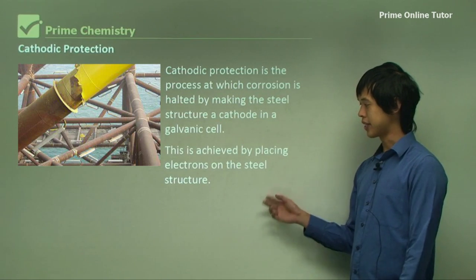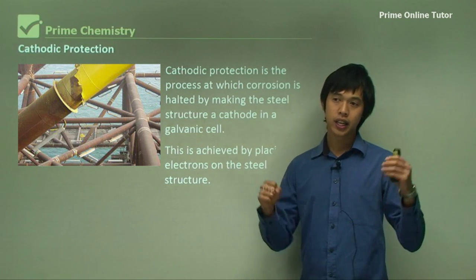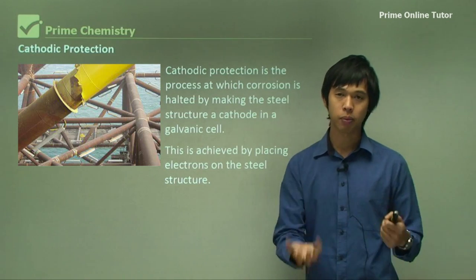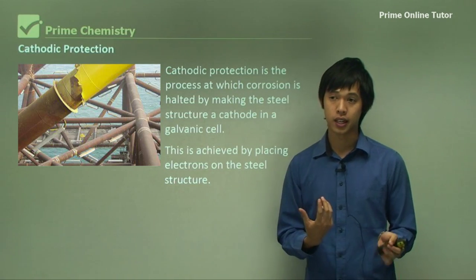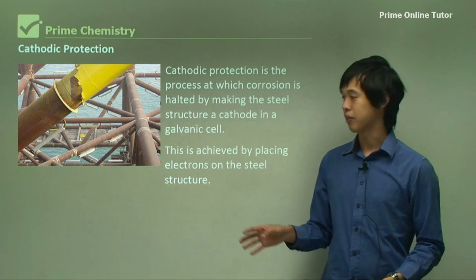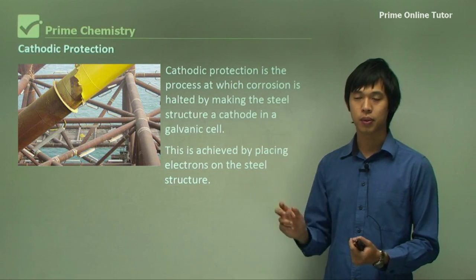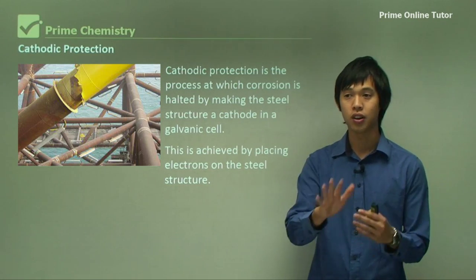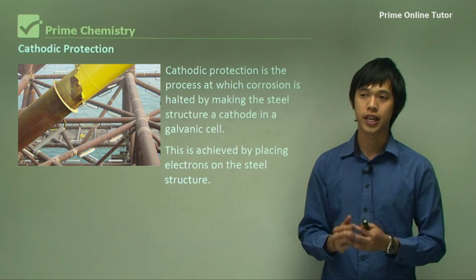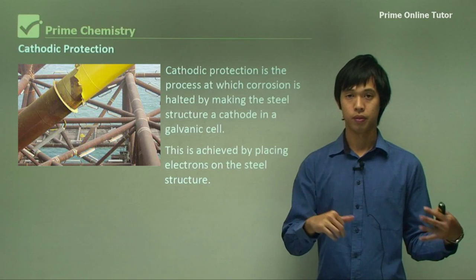This is achieved by placing electrons on the steel structure. Ordinarily, what would happen is oxygen would attack the iron, grab electrons from it, and turn it into Fe+ — some kind of iron ion. Instead, what we're going to do is get something that can pump electrons onto the iron surface, and that will protect it from corrosion.